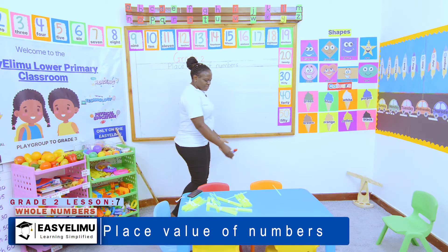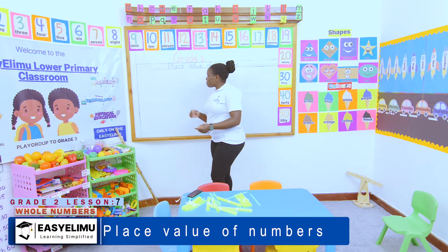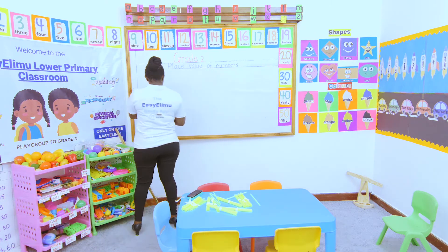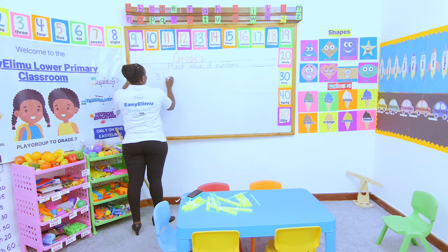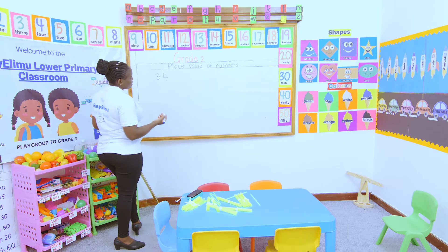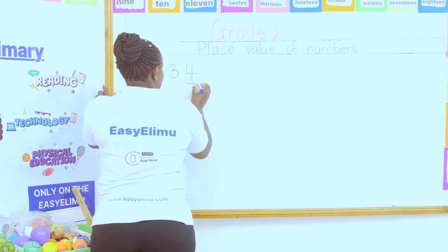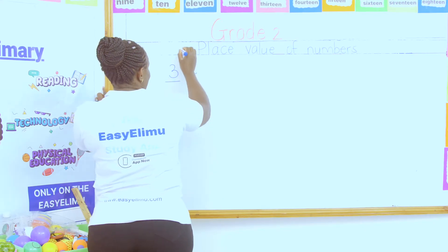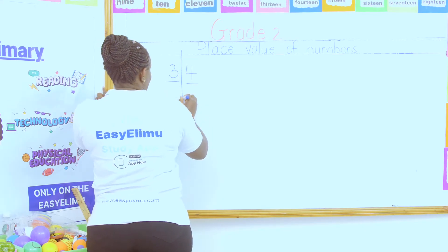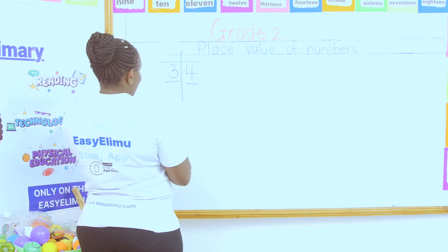Place value — what is your place? The place value of a number is the position of that number. If I've been given the number 34, I'm being asked: what is the place value — what is the place of the number 4, and what is the place of the number 3? When talking about place value, we apply the place value chart.